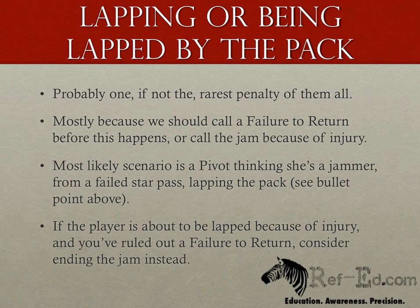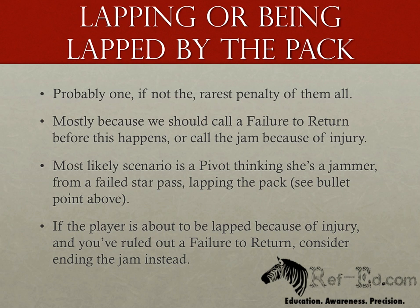A couple of penalties that are probably the rarest for out-of-play are lapping the pack or having been lapped by the pack. About the only time I see someone lapping the pack is if there's a failed star pass and the pivot thinks she's the jammer — for more details, check out the star pass module at refed.com. Being lapped by the pack is more rare, but easier to visualize. One scenario is an injured skater not keeping up with the pack. You'd likely be more tempted to end the jam for an apparent injury; if the skater isn't injured, a failure to return penalty should be issued before the pack laps her.